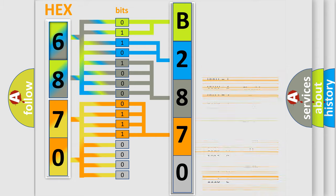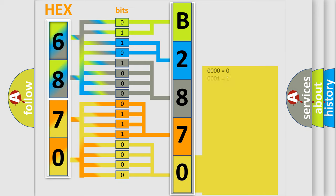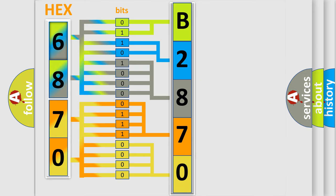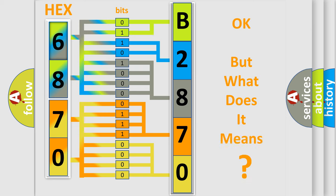A single byte conceals 256 possible combinations. We now know in what way the diagnostic tool translates the received information into a more comprehensible format. The number itself does not make sense to us if we cannot assign information about what it actually expresses.